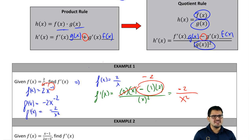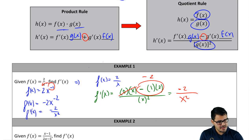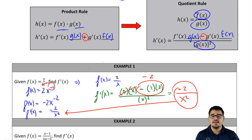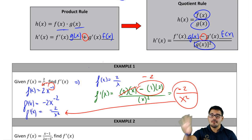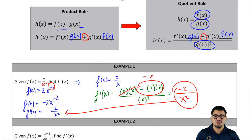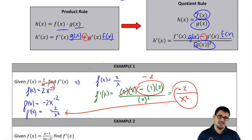So we get -2/x² from the power rule and -2/x² from the quotient rule — both methods give the same answer, which confirms they're valid. But the power rule method is limited. Let me show you why we need the quotient rule.